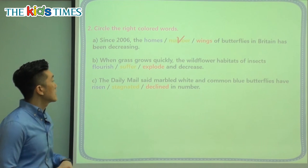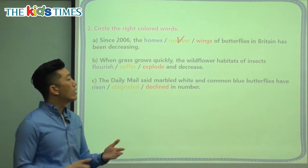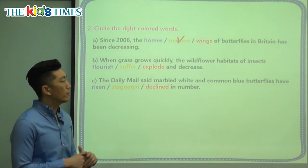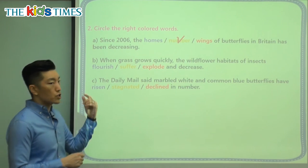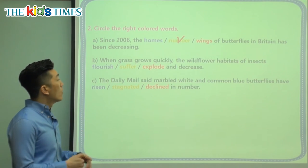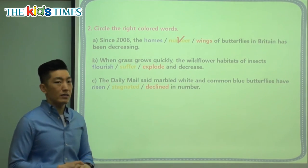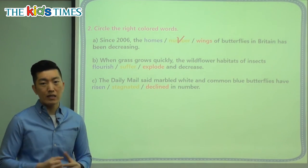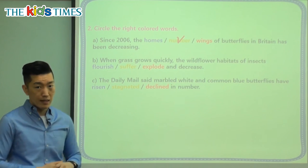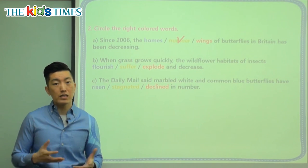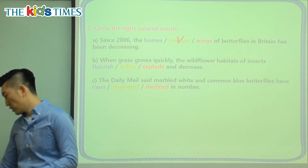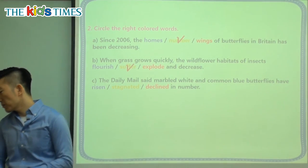Let's look at B. B says when grass grows quickly, the wildflower habitats — the places where they live — of insects flourish, suffer, or explode and decrease. Flourish means it gets much, much better. We didn't learn anything about things blowing up, so explode is not the answer. And we know that flourish — it does not grow, it does not do better. So the correct answer is it suffers.